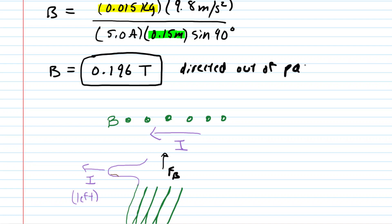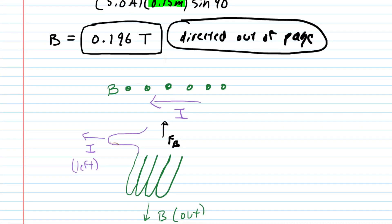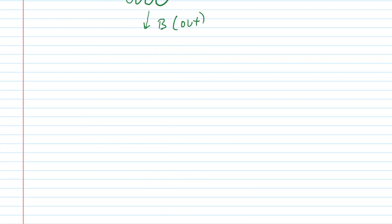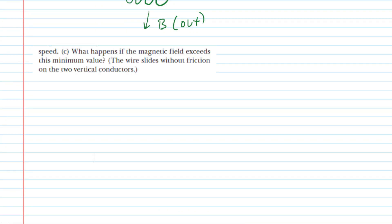So with that answered we can move on to part C. This one's not a calculation back to sort of a conceptual point. It asks in part C, what happens if the magnetic field exceeds this minimum value? Now remember we got a magnetic field of 0.196 tesla directed upward. Now this question is assuming or sort of asking us what happens if that magnetic force is larger than the gravitational force.